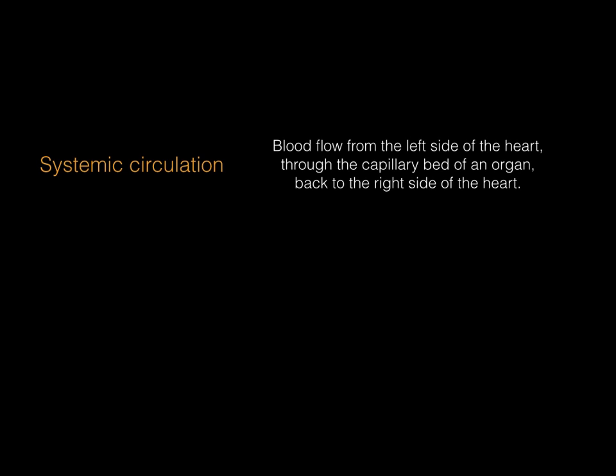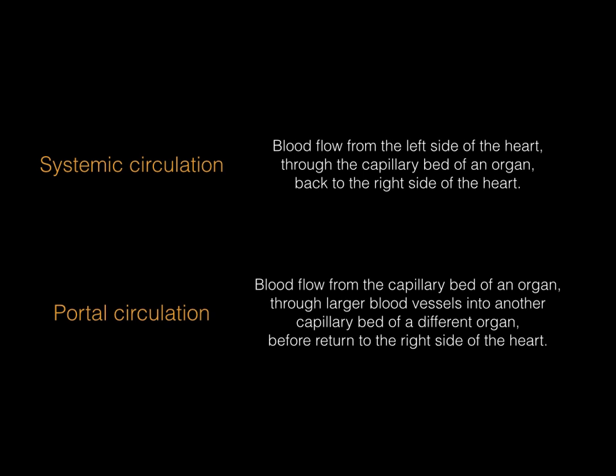Let's start by covering some important terminology. The term systemic circulation refers to blood flow from the left side of the heart through the capillary bed of an organ and returning back to the right side of the heart. Contrast this to the term portal circulation, which refers to blood flow from the capillary bed of one organ through larger blood vessels into the capillary bed of another organ before returning to the right side of the heart.